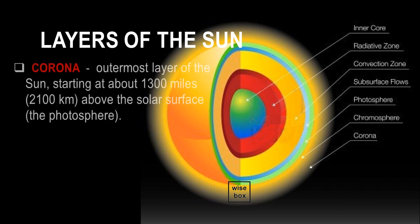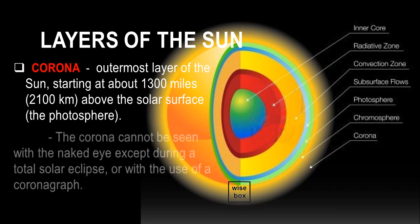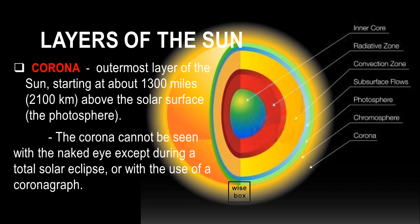The corona is the outermost layer of the Sun, starting at about 1,300 miles, or 2,100 kilometers, above the solar surface, which is the photosphere. The corona cannot be seen with the naked eye except during a total solar eclipse or with the use of a coronagraph.